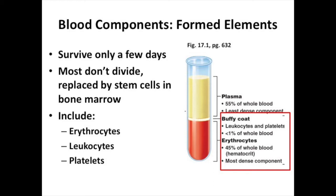Now we're going to talk about the living component of blood. We've covered the non-living matrix — the plasma. Now we talk about what are called the formed elements. These only survive for a couple of days, as opposed to some of our other cells which can last years and years. The other very odd thing about blood cells is they don't do cell division by mitosis. If you cut yourself and your skin heals with scar tissue, that's because skin cells and connective tissue have done mitosis to heal that area.